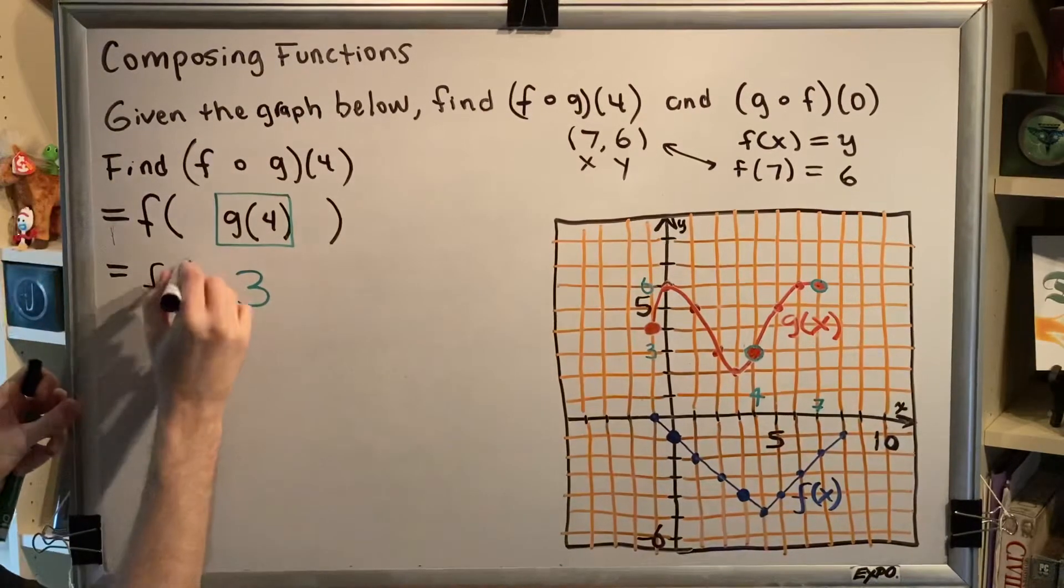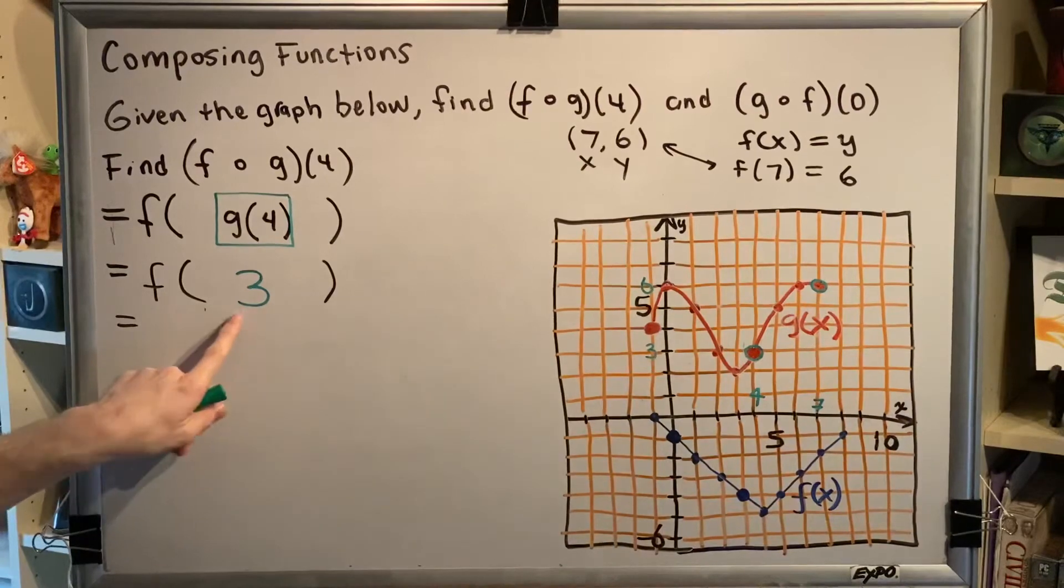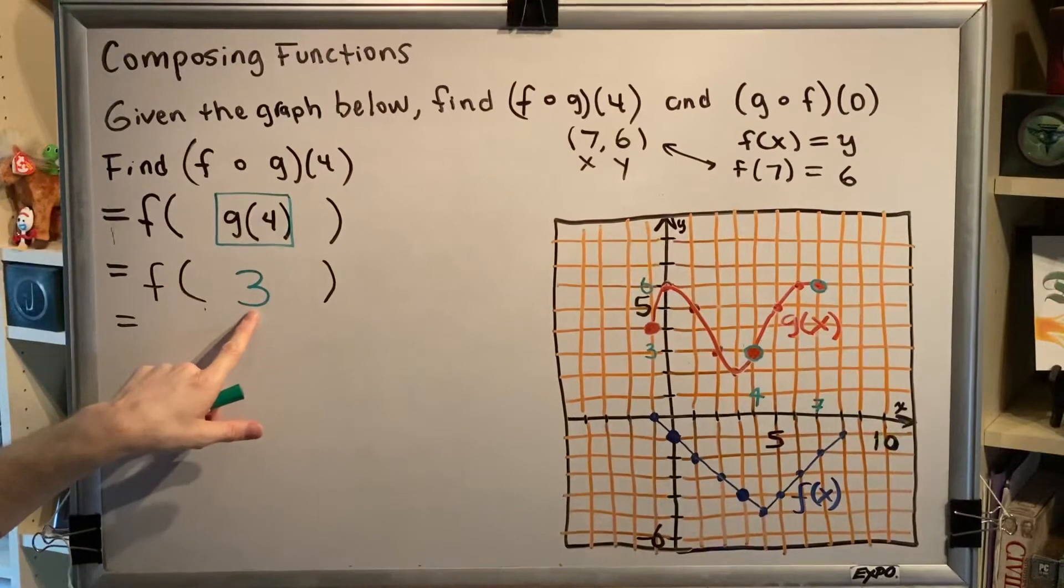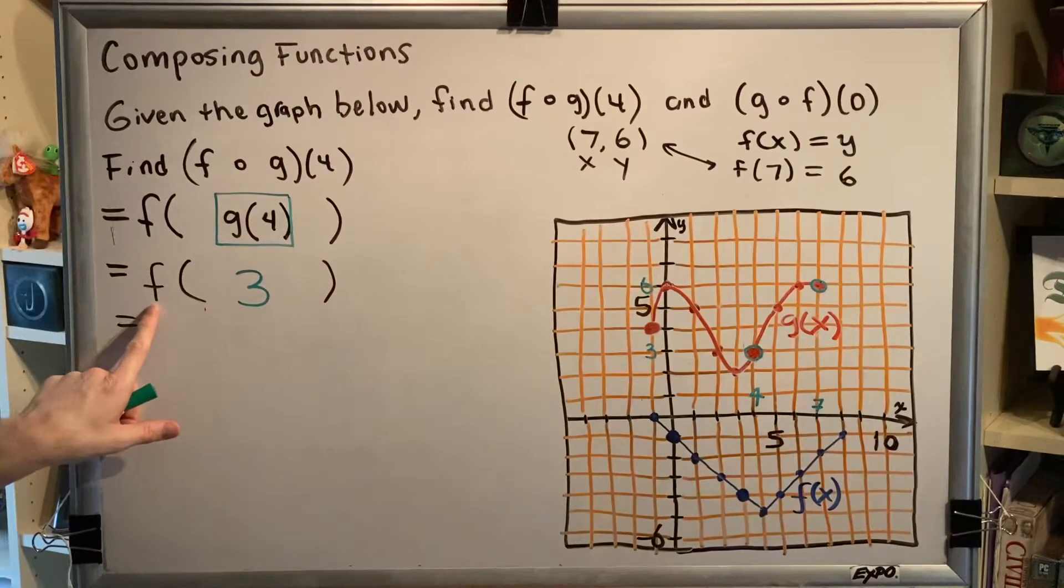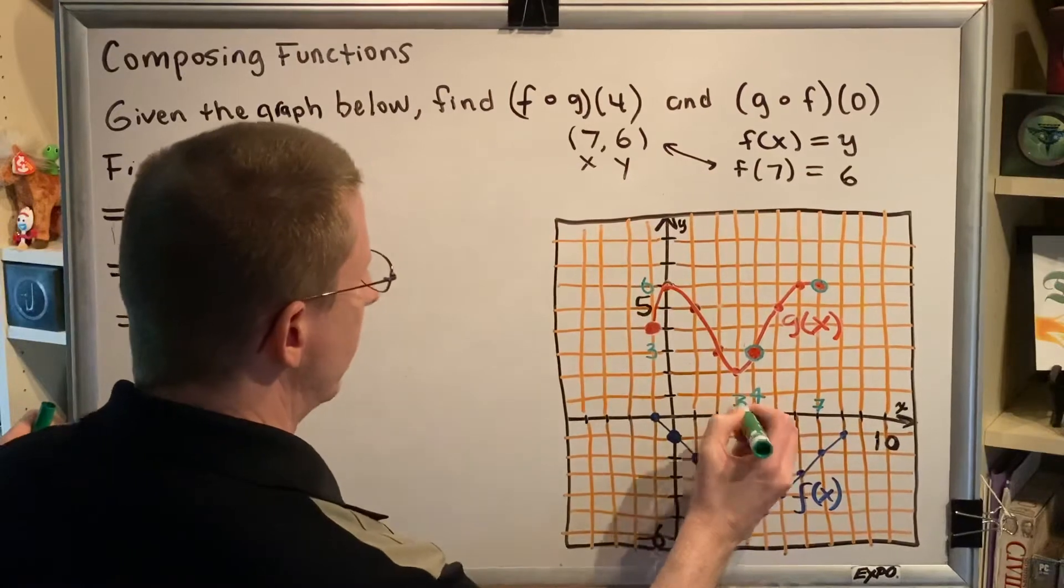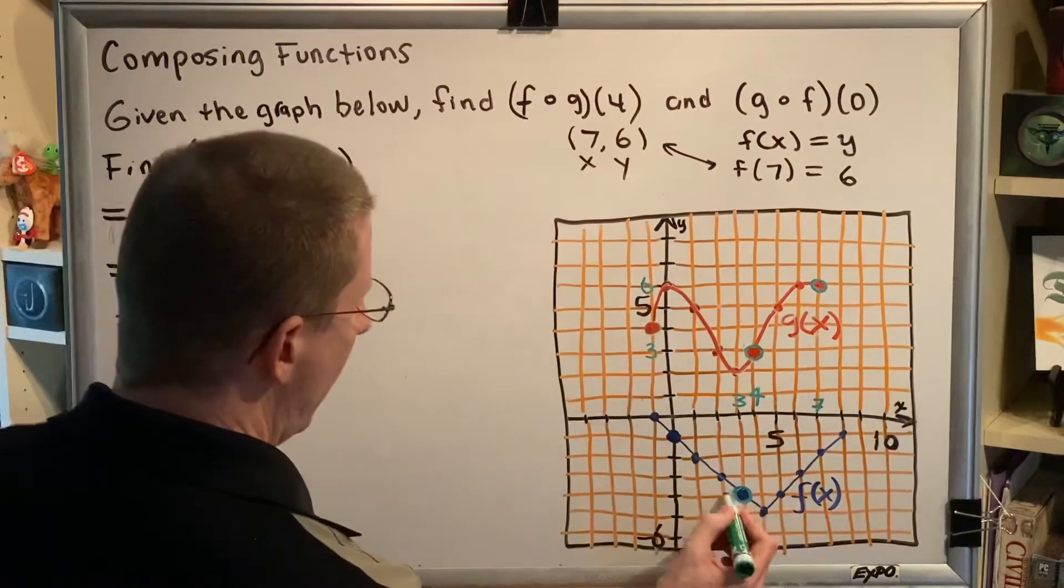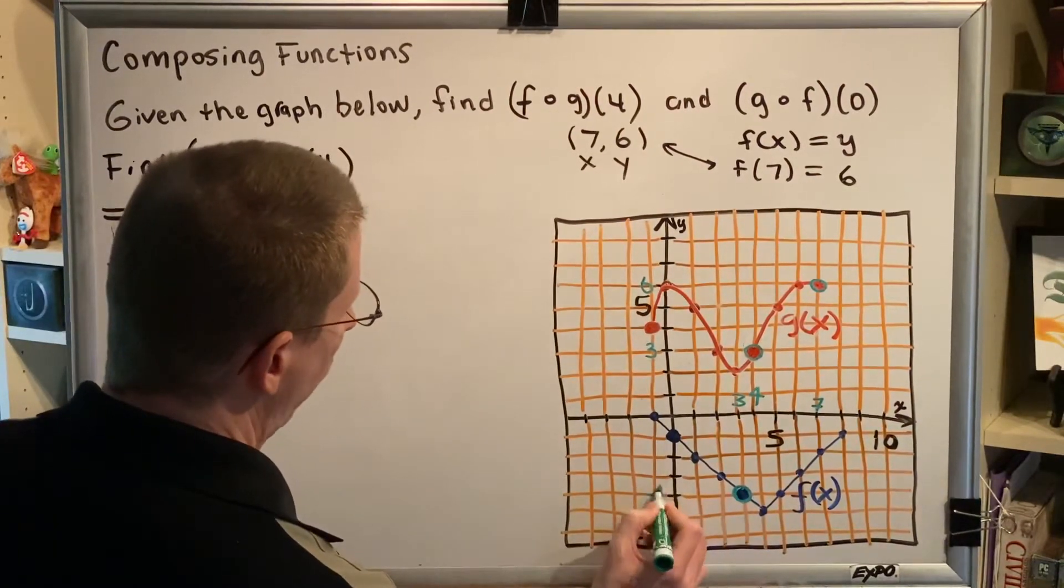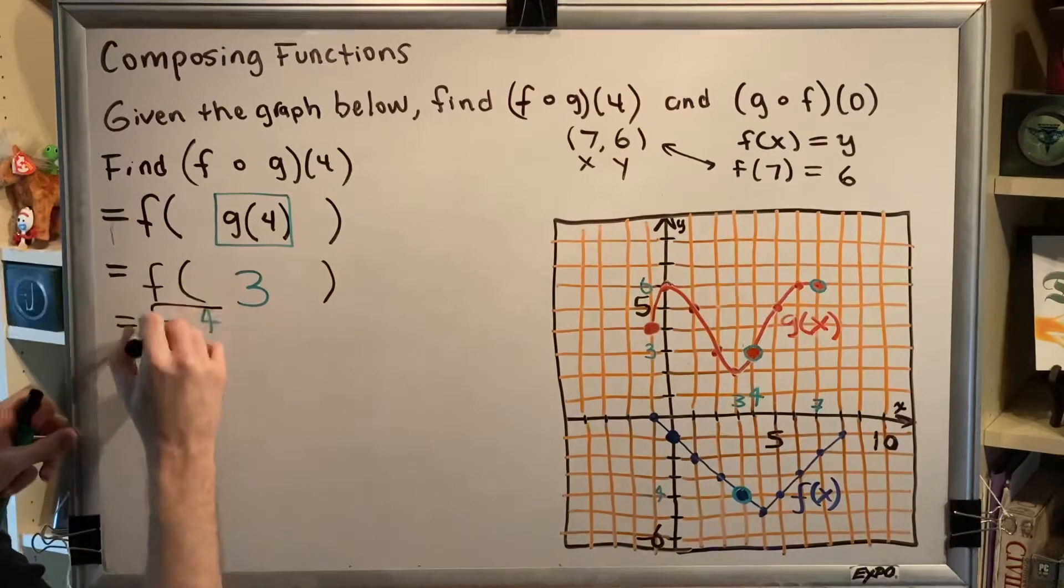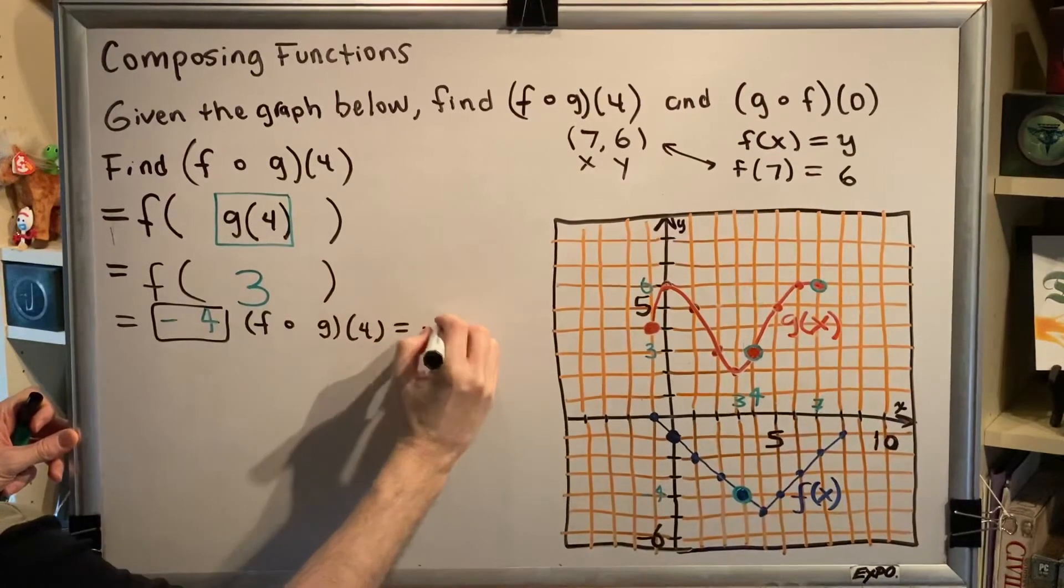Everything else about the problem remains unchanged and I simply write it around the work that I've already done. Now I need to find f of 3. Once again, the number inside the parentheses is a value for x. So x is 3, only this time I'm going to go to function f to see what the output is. I find 3 on the x axis and specifically I find which point on function f has an x coordinate of 3 and then I determine its y value and the y value is negative 4. So the answer to this question is negative 4. You can just write negative 4 or you can write f composed with g of 4 equals negative 4.